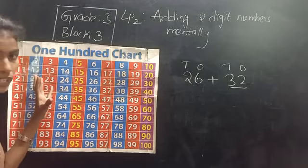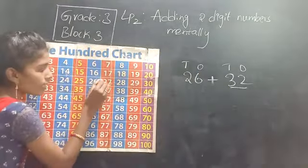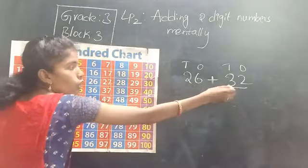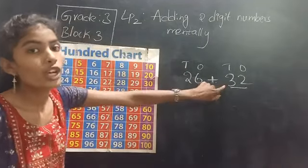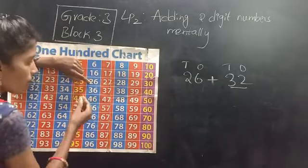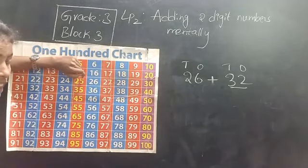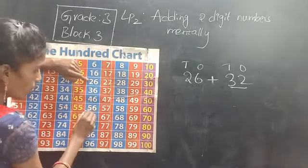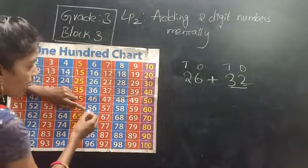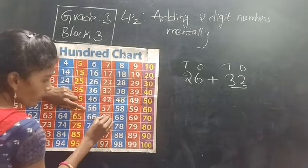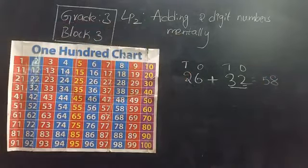Now keep the pattern in your mind. I am adding 26 and 32 — choose 26. Here is 26. In 32 there are 3 tens, so from 26 you have to go 3 steps down: 26, 36, 1, 2, 3 — you get 56. And there are 2 ones in 32, so move right 2 steps: 56, 57, 58. So 58 is the answer on the 100 chart.